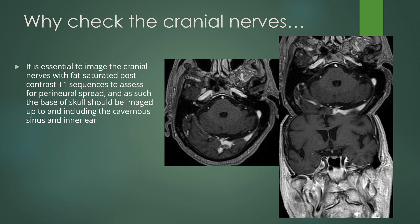When you have a malignant parotid or other salivary gland lesion, it is always important to check the cranial nerves. You look at thin-cut fat-sat post-contrast T1 to look for perineural spread, especially at the skull base, and you should image up to and including the cavernous sinus and inner ear. This shows abnormal enhancement of the right geniculate ganglion and the facial nerve — perineural spread of tumor along the right facial nerve — as well as abnormal enhancement within foramen ovale representing perineural spread through the trigeminal nerve and into the right Meckel's cave.